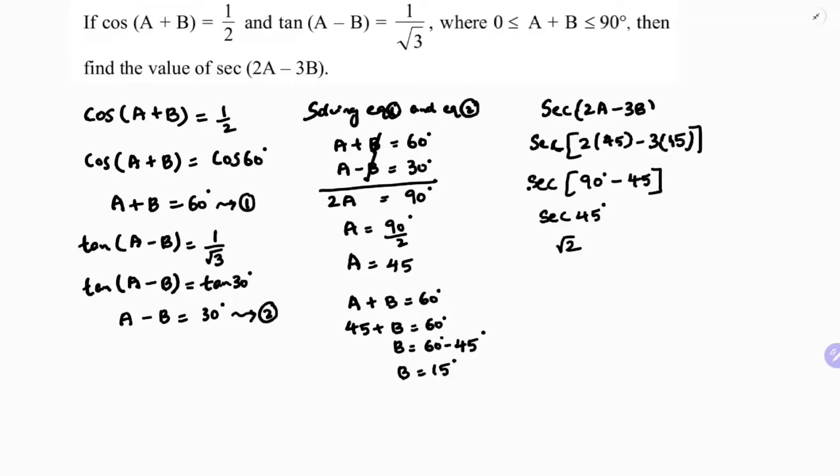Sec 45 value is again you will get in the table, that is root 2. So sec(2A - 3B), the answer is root 2.